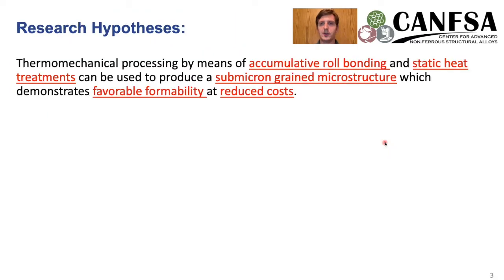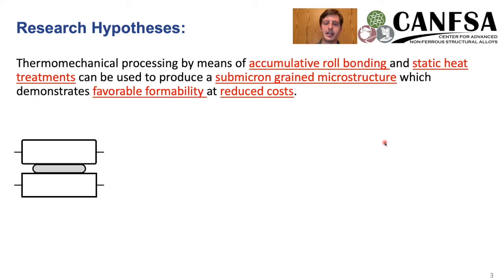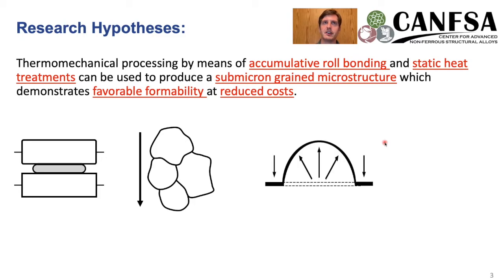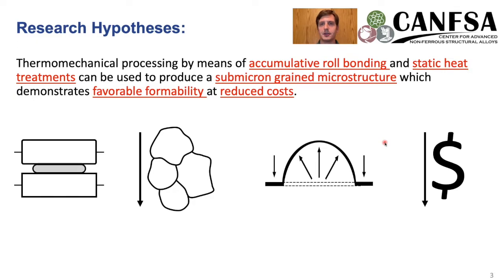We set up a few hypotheses for this project, the main one being: can we use this accumulative roll bonding technique to refine our microstructure, which will give us very favorable formability characteristics that allow us to produce high quality, high intricacy parts at a lower cost?